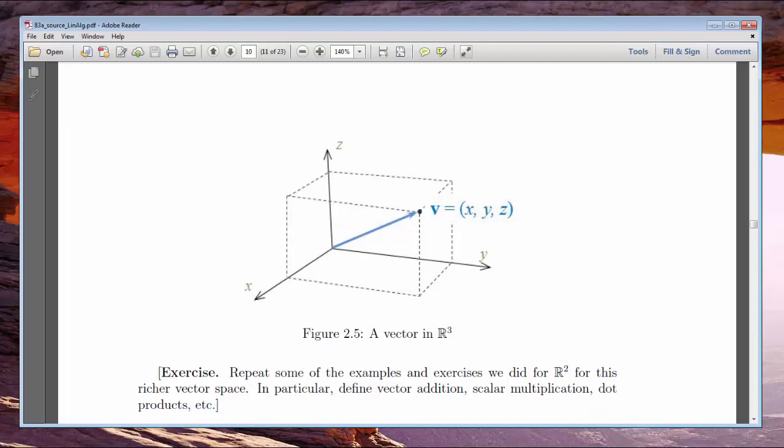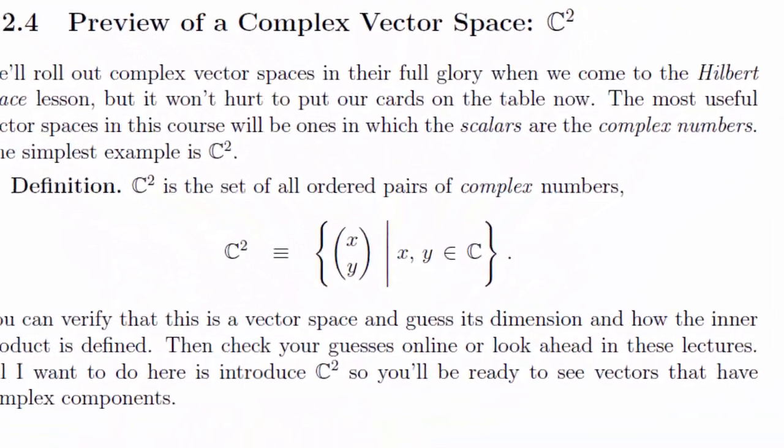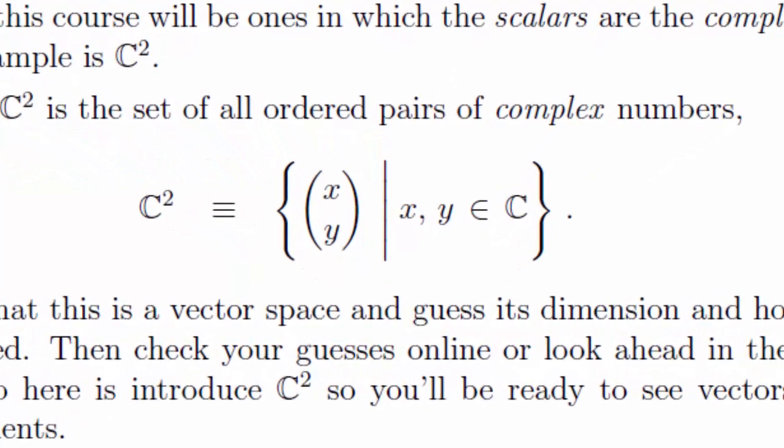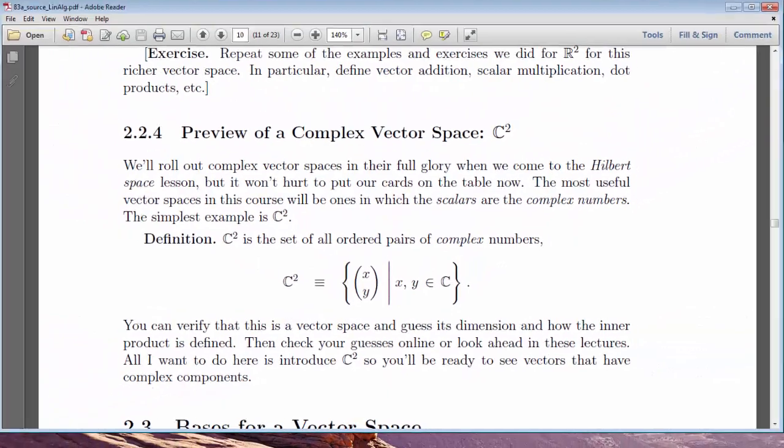But the vector space upon which all of quantum computing is built is called C2, the ordered pairs of complex numbers. C2 scalars happen to be complex rather than the real scalars of R2. We'll have an entire chapter devoted to C2. Every qubit's value lives in this unusual vector space.